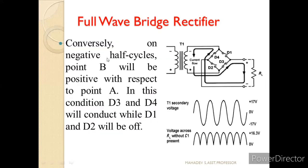Similarly, during the negative half cycle, diodes D1 and D2 are off and diodes D3 and D4 get on. Current flows through D3, through the load resistor RL, then to D4, forming a closed loop again. So during the negative half cycle D1 and D2 are off while D3 and D4 are on. This is how the full wave bridge rectifier works, and this is the output waveform of this full wave rectifier without a capacitor.